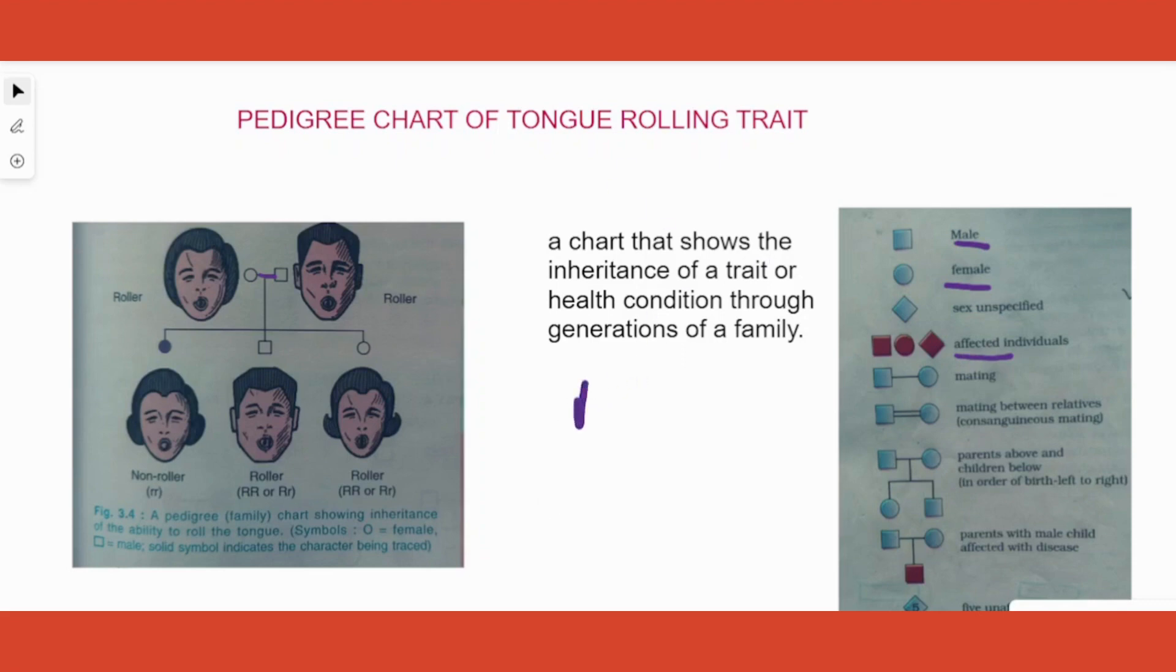Tongue rolling is a normal trait. Whenever you have a dominant allele R, the person can roll their tongue. If two dominant alleles are there, definitely he or she can roll the tongue. If one is also there, one dominant allele, he or she can roll the tongue.